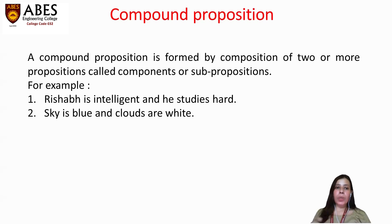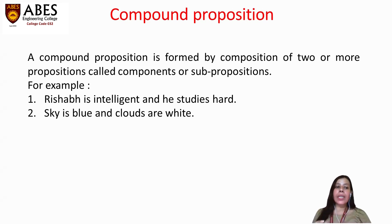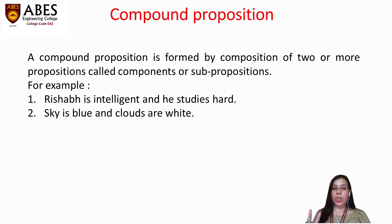Next is compound proposition. A compound proposition is formed by the composition of two or more propositions called component or sub-propositions. So when we combine two or more propositions to form a new proposition, that is known as a compound proposition. For example: 'Rishabh is intelligent and he studies hard.' If we break it down, we can see it is made up of two propositions — first, 'Rishabh is intelligent,' and second, 'he studies hard.'